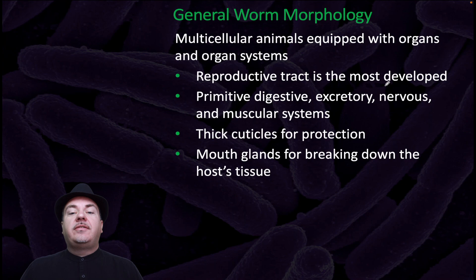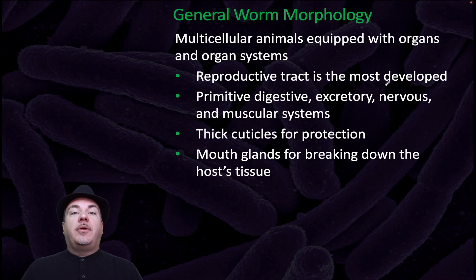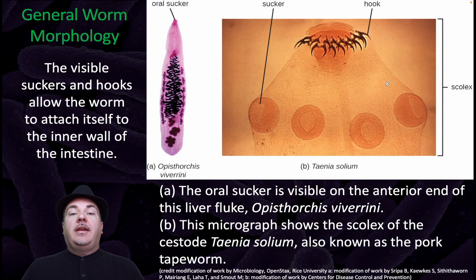Helminths are multicellular animals equipped with organs and organ systems. Their reproductive tract is the most developed. They have primitive digestive, excretory, nervous, and muscular systems. They have a thick cuticle for protection and mouth glands for breaking down the host tissues. An example of their morphology is their mouth — the visible suckers and hooks allow the worm to attach itself to the inner wall of the intestine.